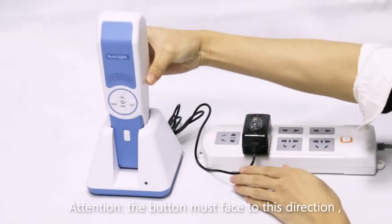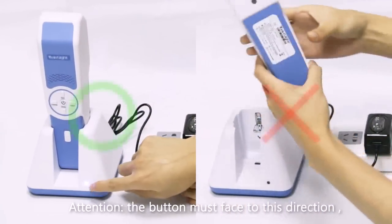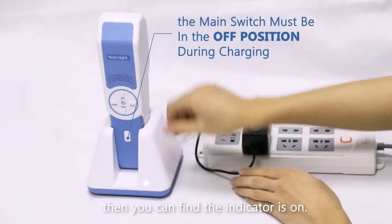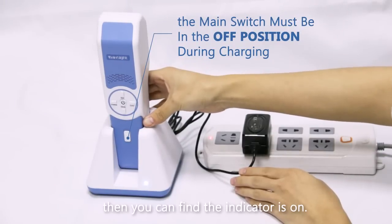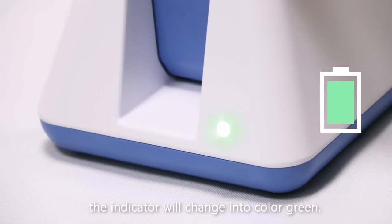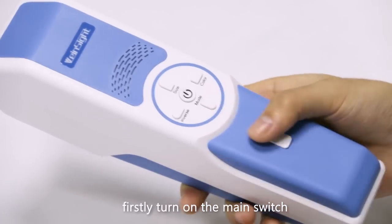Then put the imaging unit into the charging cradle. Attention: the button must face this direction. You can find the indicator is on when the battery is charging. When the battery is fully charged, the indicator will change to green.